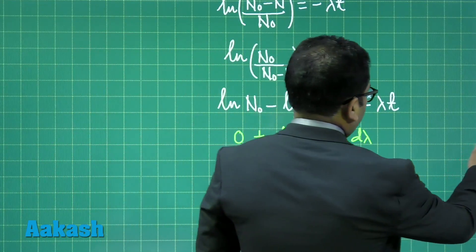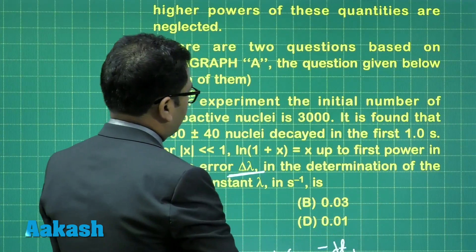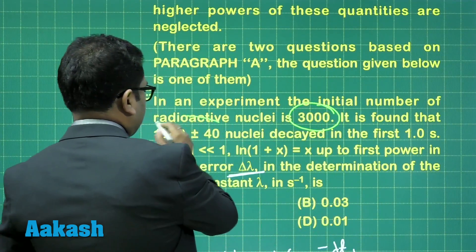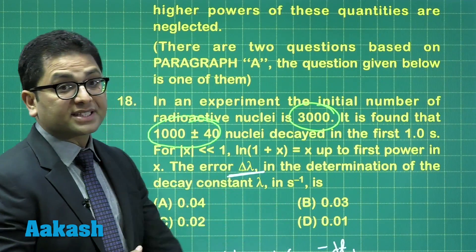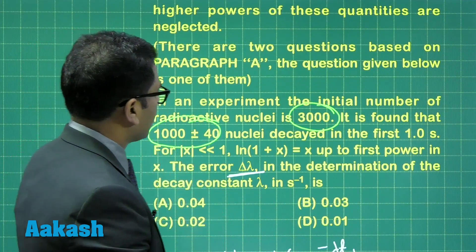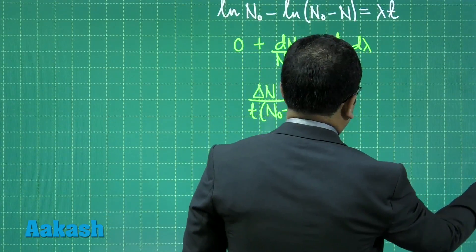If you see the value here, you'll be getting initial N naught equals to 3000. And the number of nuclei which has decayed, which has been represented by N here, is 1000 plus minus 40. So here, the idea is very simple.